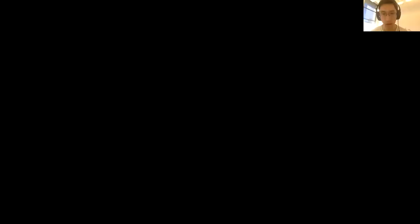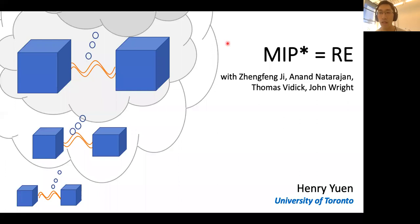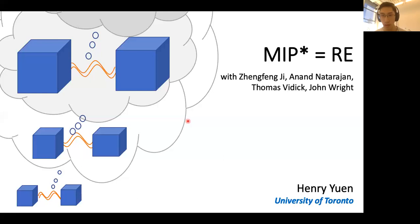Thanks, Gautam. So today I'm going to talk about the result MIP* equals RE. This is joint work with Zhang Fengji, Anand Natarajan, Tomah Vidick, and John Wright. This talk is going to be focused on the connection between two questions that are seemingly very different from each other.